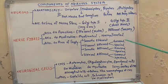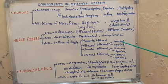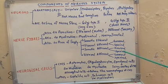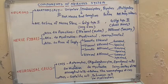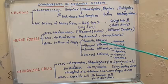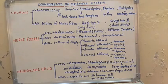That means one is collecting general information, another is collecting special information, and so on. But you must remember that somatic efferent does not divide into these general and special types.